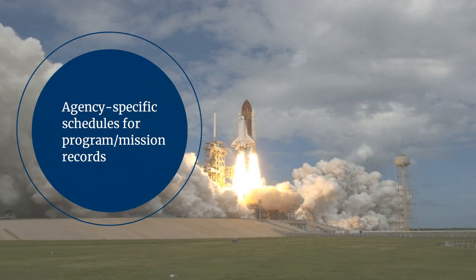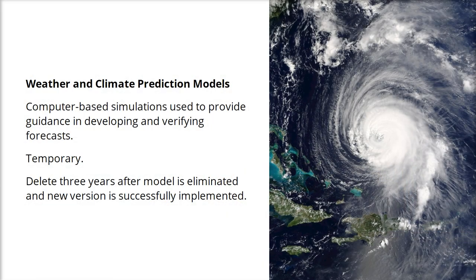Of course, in addition to general administrative activities, government agencies do many different types of work. Each agency has its own unique mission and its own specific programs, and each agency will have records that directly support and document those programs. Those program records, sometimes called mission records, are covered by agency-specific record schedules that are drafted by each agency and reviewed and approved by the National Archives.